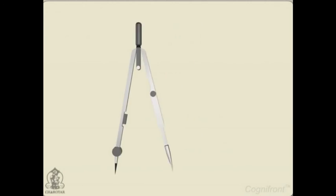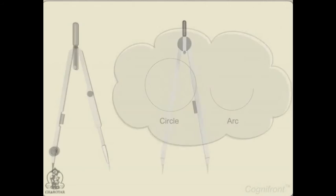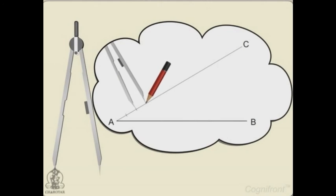As you already know, the compass is used for drawing circles and arcs. The divider is a little different with both legs made of steel and is used for transferring distances.